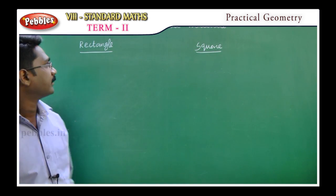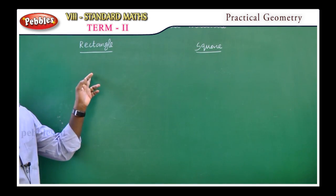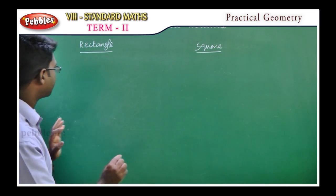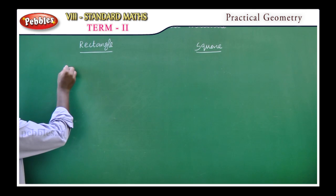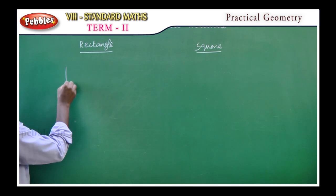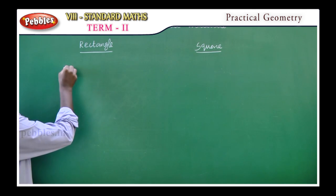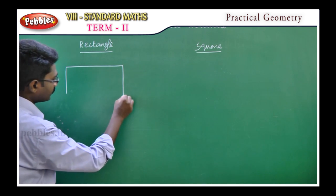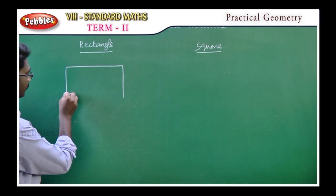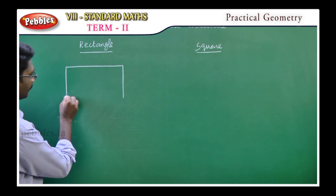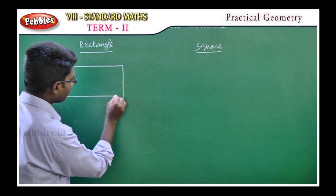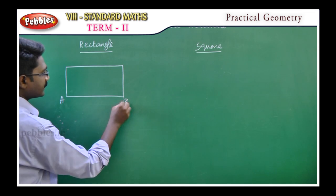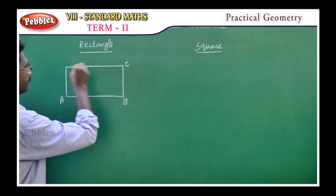The next shape is rectangle and square. The shape is rectangle. The vertices are labeled A, B, C, D. This is a rectangle.